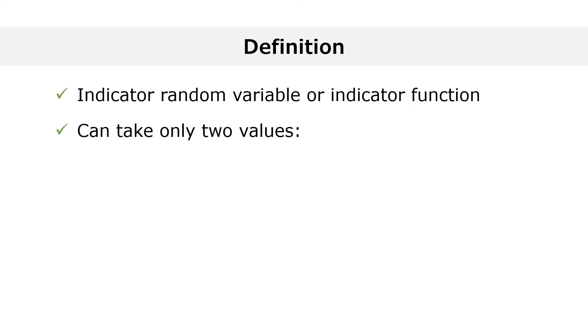An indicator random variable or indicator function is a random variable that can take only two values, either one if a certain event E happens, or zero if the event E does not happen. The indicator of an event E is denoted by one sub E.